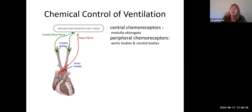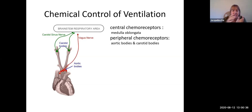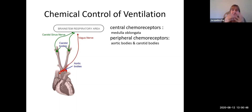Now let's talk about the chemical control of ventilation. Centrally, we have chemoreceptors in the medulla oblongata giving information to the neural control centers. We also have peripheral chemoreceptors — the aortic bodies in the arch of the aorta and the carotid bodies where the common carotid arteries bifurcate bilaterally. These give information to the respiratory centers in your brain stem so they can adjust the depth and rate of your breathing to maintain proper ventilation.